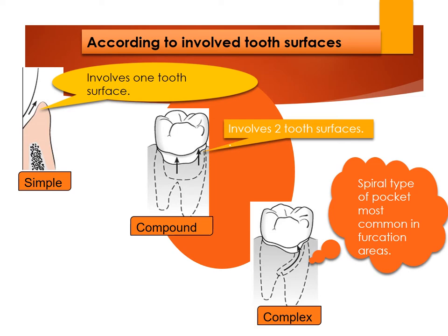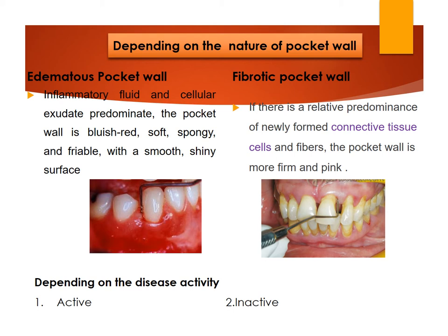Regarding the nature of the pocket wall, there are two types: edematous and fibrotic. In an edematous pocket wall, inflammatory fluid and cellular exudate predominate; clinically it appears bluish-red, soft, spongy, and friable with a smooth shiny surface. In a fibrotic pocket wall, newly formed connective tissue cells and fibers predominate; this wall appears firm and pink and can hide the underlying edematous component. Depending on disease activity, pocket walls can be classified as active or inactive.